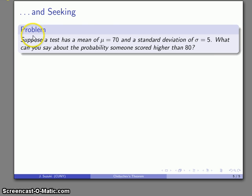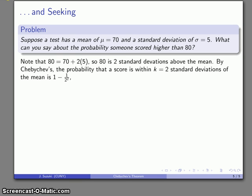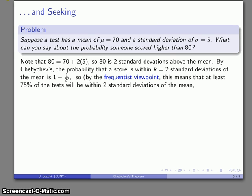And again, we can consider this as another case, keeping our test with the same mean and same standard deviation. What if I get somebody who scores higher than 80? So I'll note that 80 is two standard deviations above the mean. And by Chebyshev's, the probability of being within two standard deviations of the mean is going to be 1 - 1/2², about 75%.